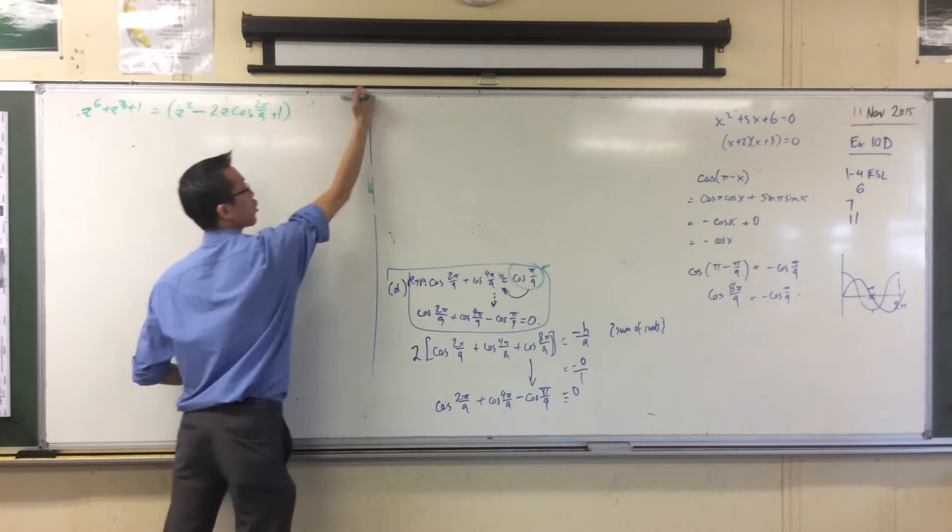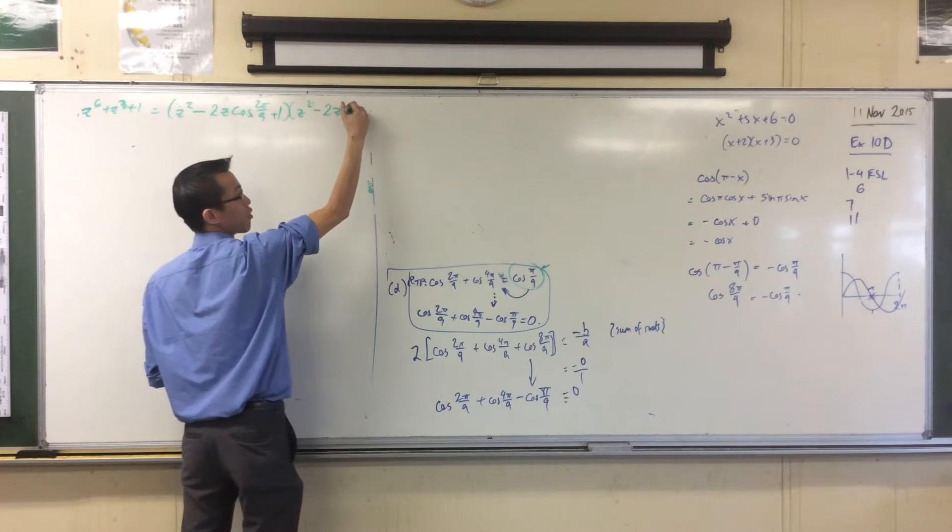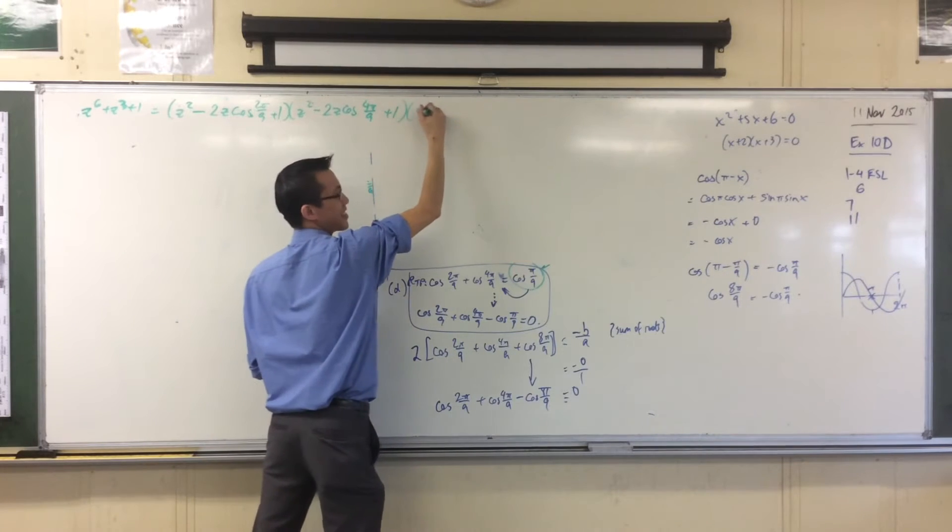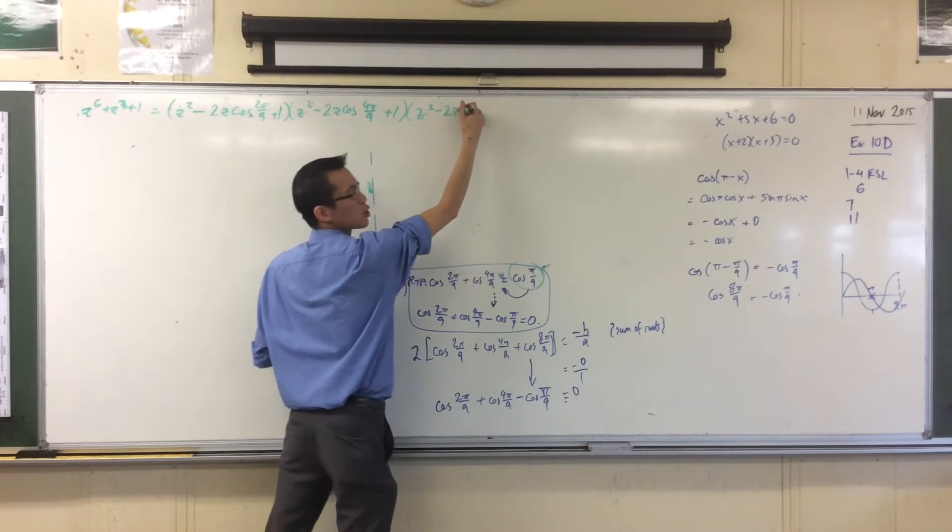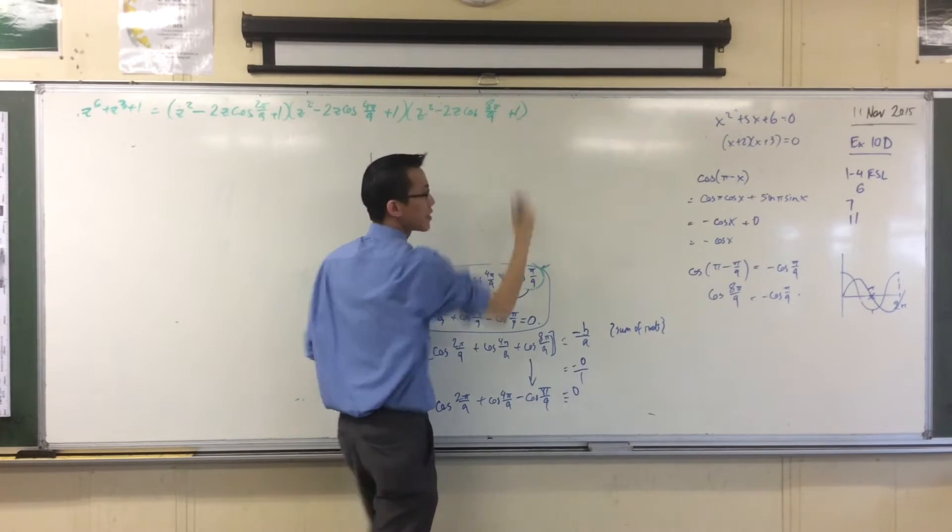Z to the 6 plus Z cubed plus 1 equals, take a deep breath, this guy. Well, I'll just write this down and let me make a comment on that as soon as I make sure I don't get the terms wrong. Yeah, that's right. It looks suitably cool. I guess I'll stop there.